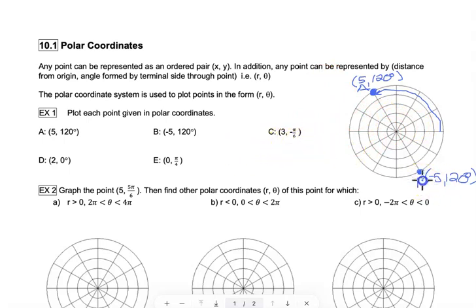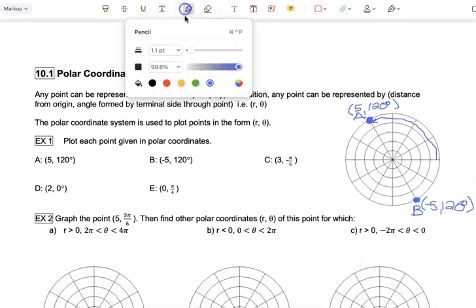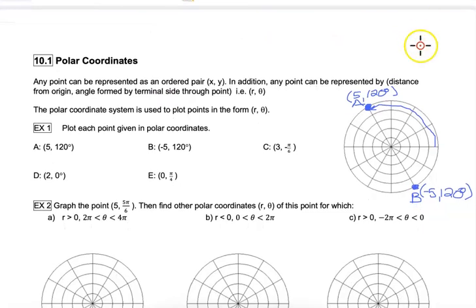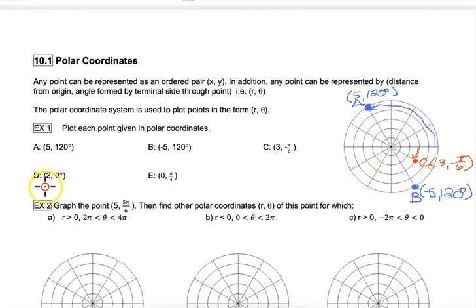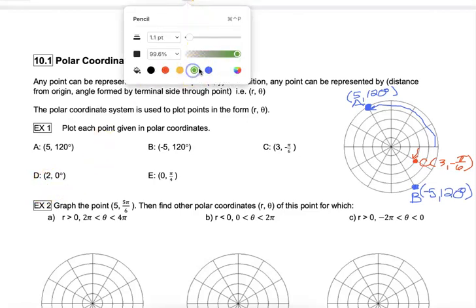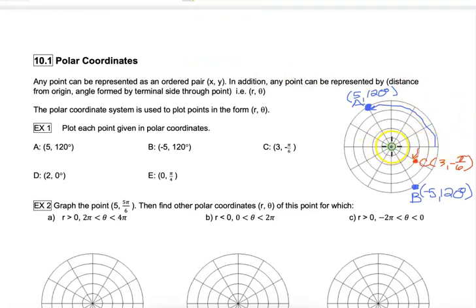Point C is 3, negative pi over 6. Pi over 6 is the same as 30 degrees. To plot 3, negative pi over 6, I go to the third circle out and negative 30 degrees, landing right here. This is point C at 3, negative pi over 6. For point D, it says 2, 0 degrees — 2 means the second circle out, and 0 degrees means the positive x-axis. Because the radius is positive, we land on the second circle at 0 degrees. That is point D at 2, 0 degrees.